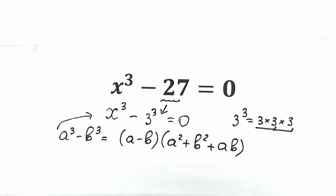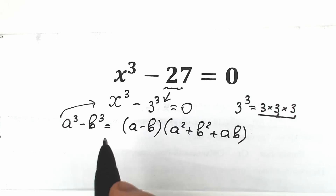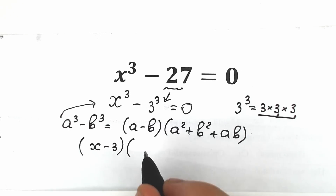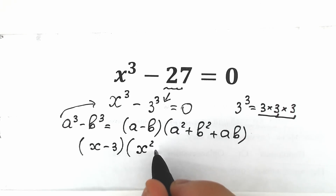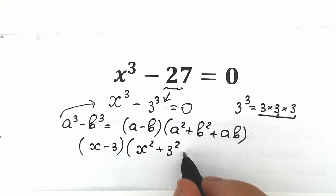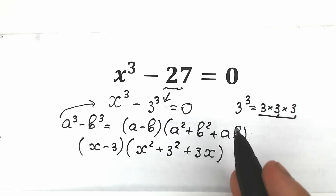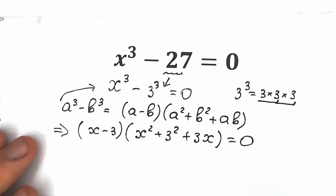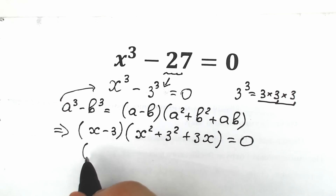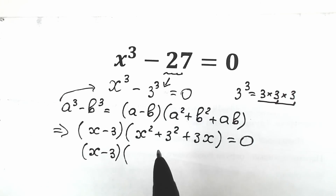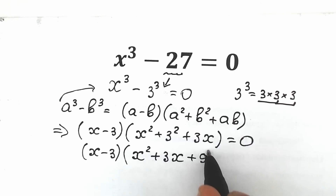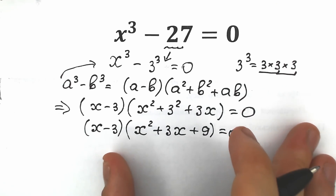We can apply the difference of cubes formula because this is the same case. The first parenthesis on the left side gives us (x minus 3), and the second parenthesis on the right side gives us (x squared plus 3x plus 3 squared), all equal to 0. Let's simplify: 3 squared equals 9, so we have (x minus 3)(x squared plus 3x plus 9) equals 0.